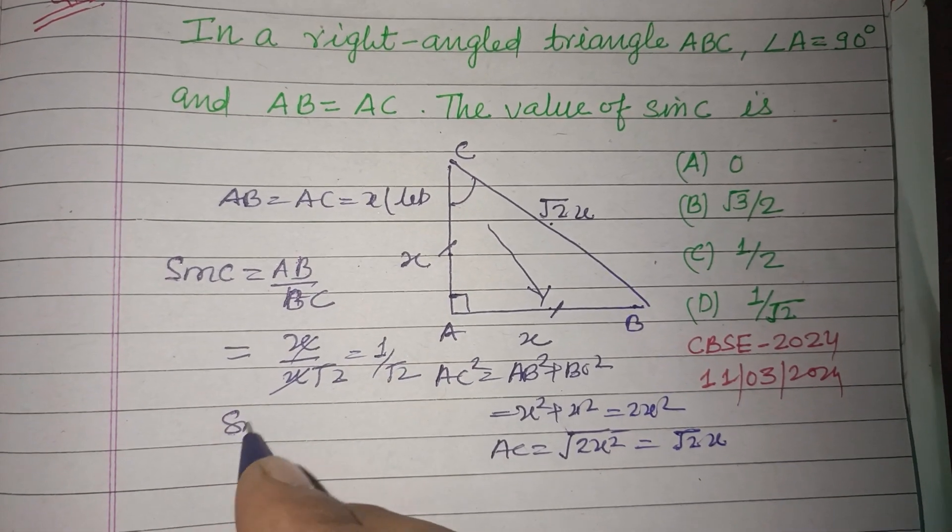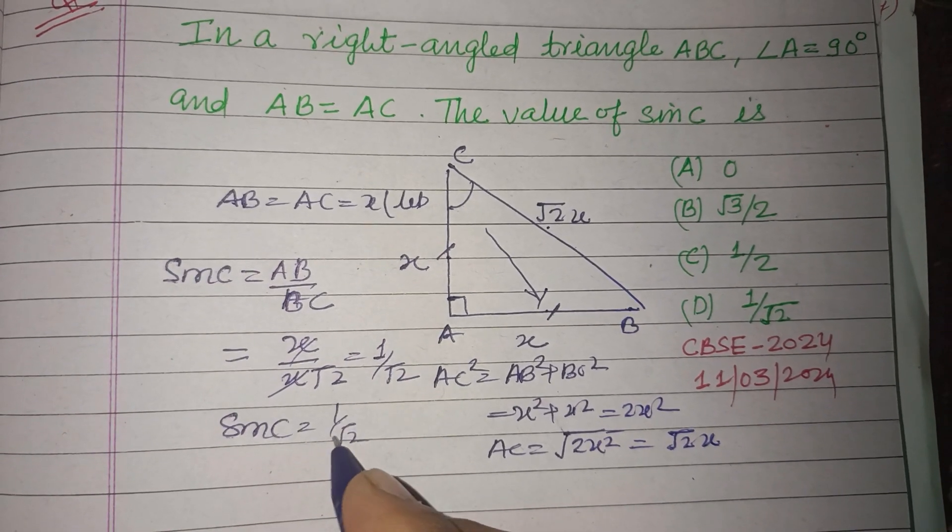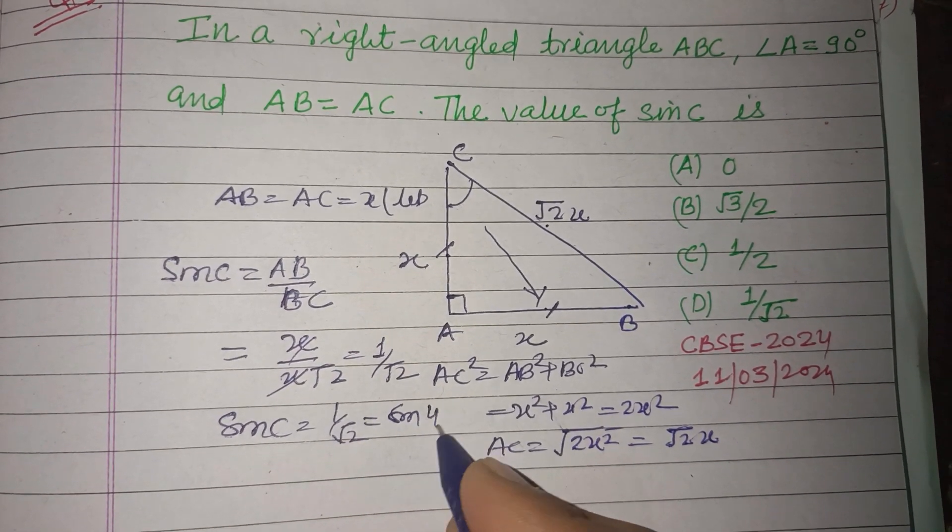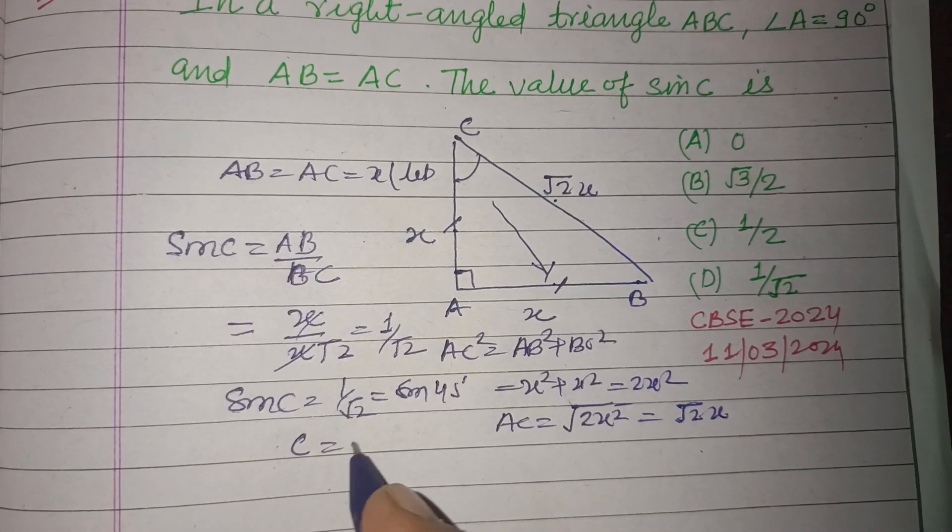Sine C equals 1/√2, and this is the value of sine 45°, so C equals 45°.